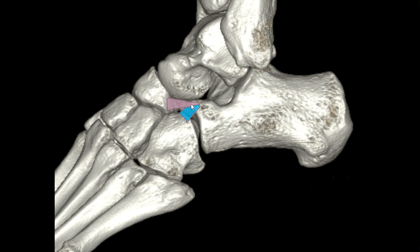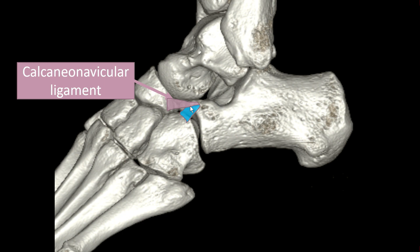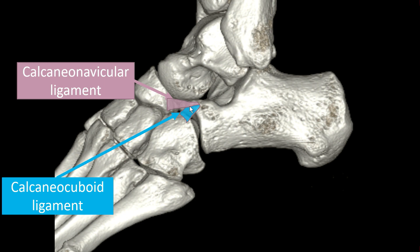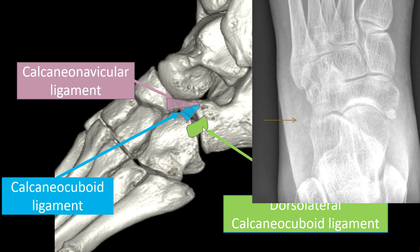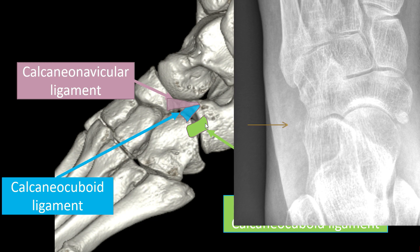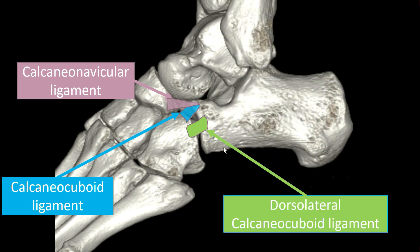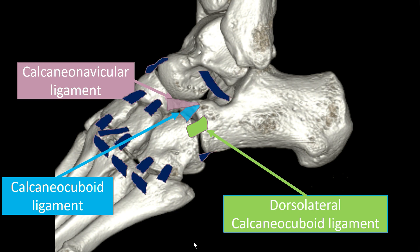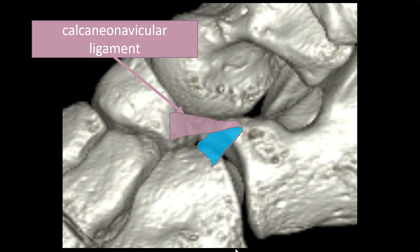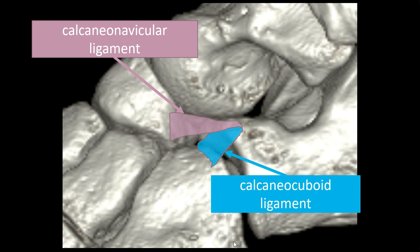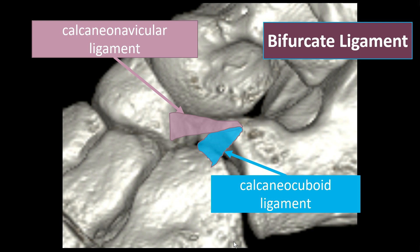The ligament runs to the lateral aspect of the navicular bone, and the second component runs to the cuboid bone. This is called the calcaneonavicular ligament — sometimes also called the lateral calcaneonavicular ligament — and this is the calcaneocuboid ligament. There is also a dorsolateral calcaneocuboid ligament where you sometimes see tiny avulsion fractures. Both together — the calcaneonavicular and calcaneocuboid ligaments — make up the bifurcate ligament.